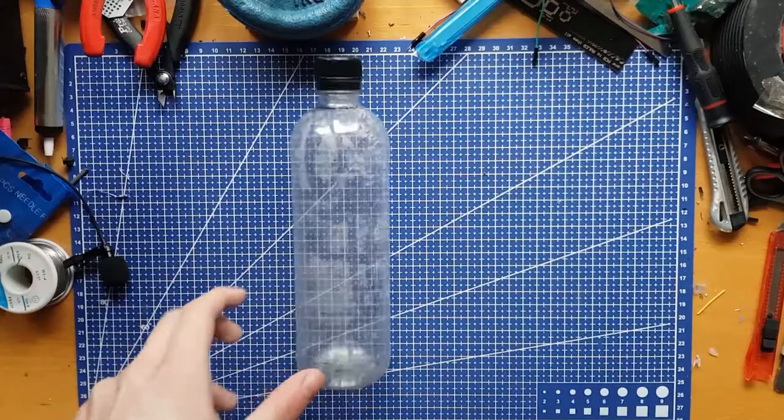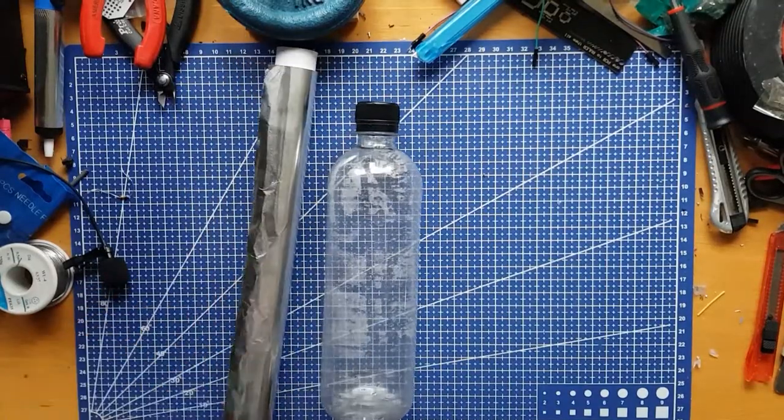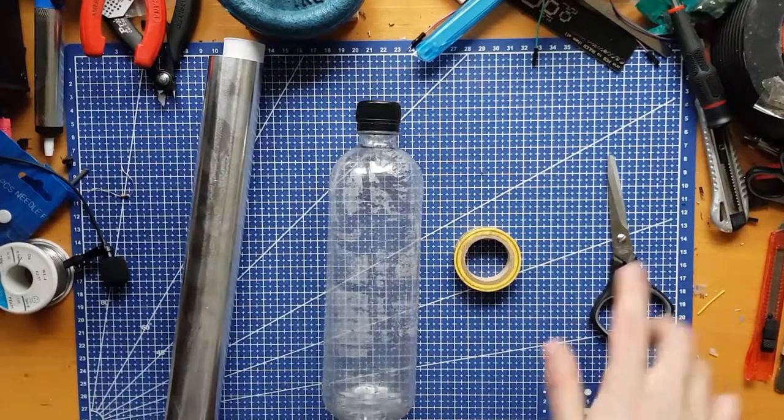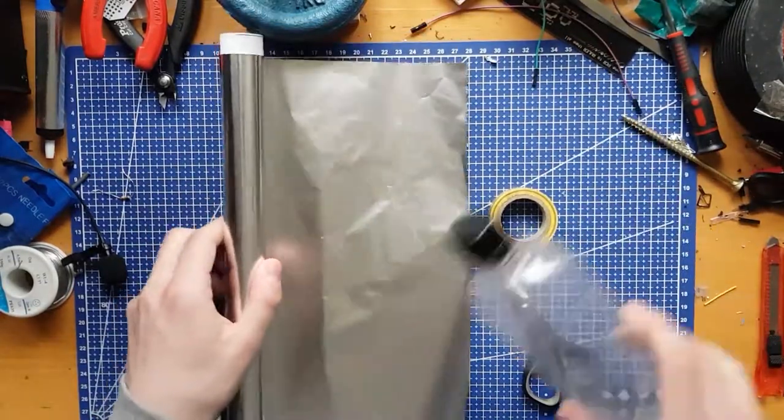So first you need a simple plastic bottle or some sort of jar. Then you'll need some aluminum foil, a conductive nail or a screw, duct tape and scissors.